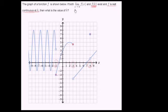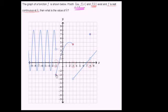Now let's look at the first constraint: the limit of f of x as x approaches k needs to exist. For x equals negative 2, the limit from the left looks like it's a little higher than 3, and the limit from the right looks like it's approaching negative 3. So the limit does not exist there — you get a different limit from the left and from the right. Same thing for x equals positive 3: the limit from the left seems like it's approaching 4½, while the limit from the right looks like it's approaching negative 4. So this is also not a candidate.